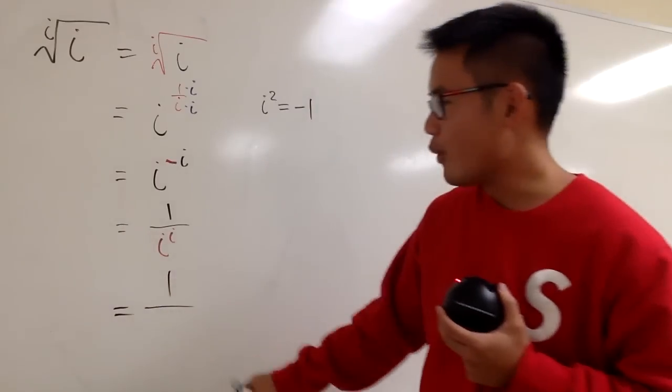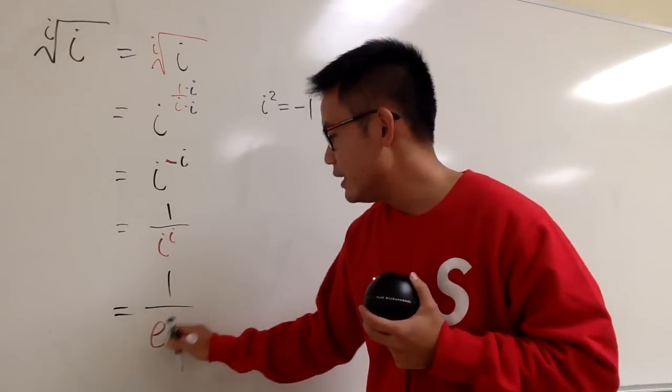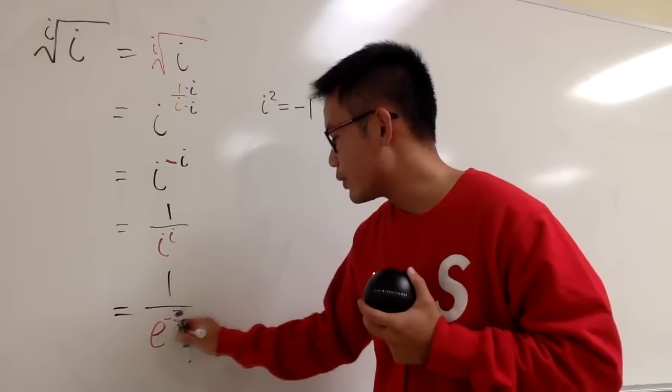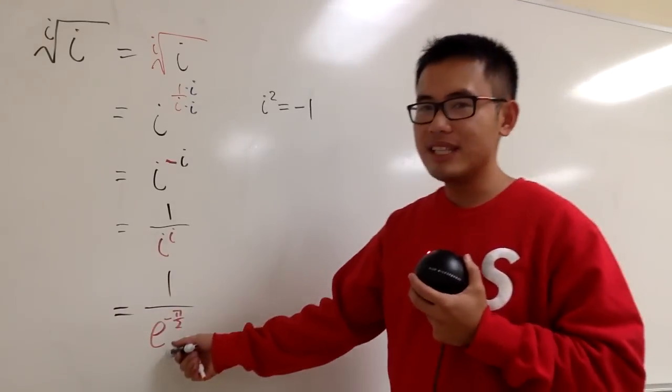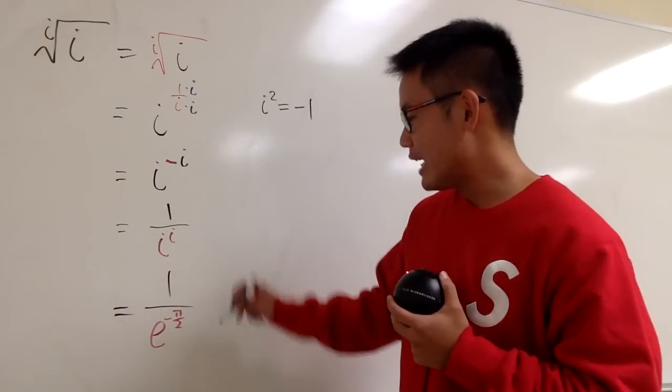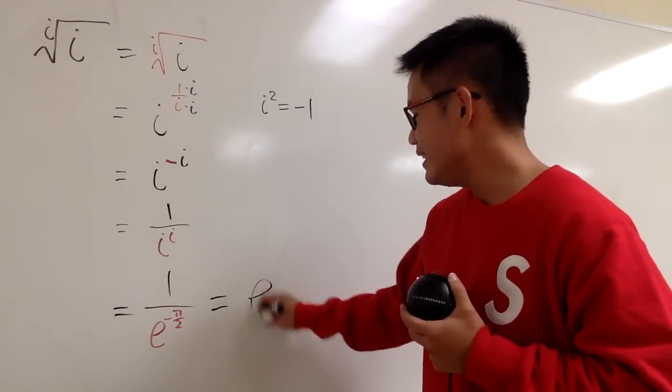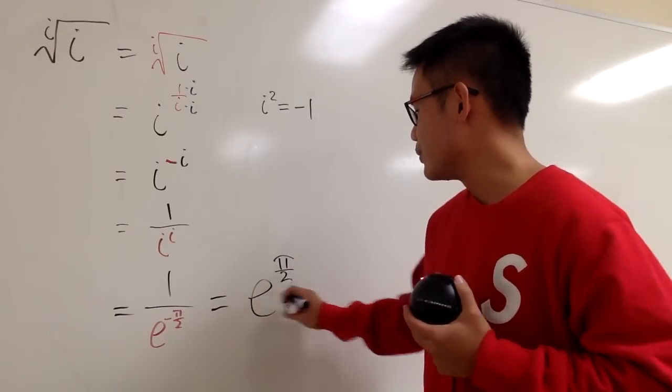This is going to be 1 over, this is the same as e to the negative pi over 2. Aha! We have a negative power in the bottom, so let me bring it up again. So this is e to the positive pi over 2, like this.